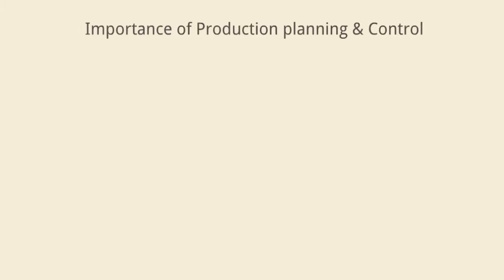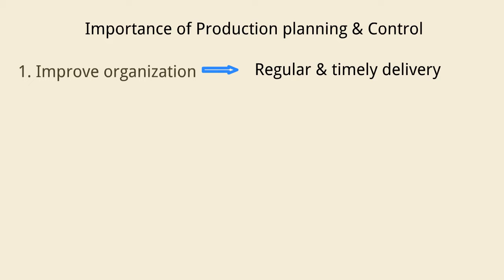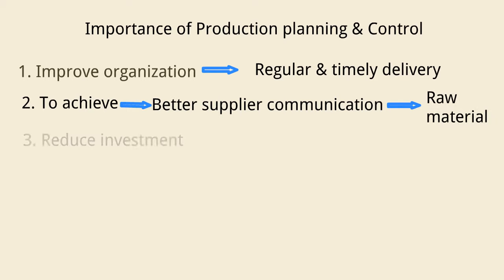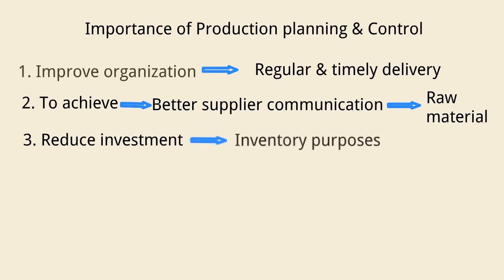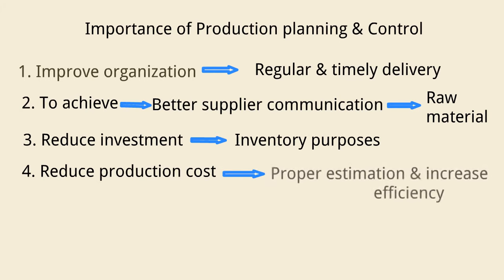What is the importance of production planning and control? 1. It is necessary to improve the organization for a regular and timely delivery. 2. It helps to achieve better supplier communication for raw material procurement. 3. Reduce investment for inventory purposes. 4. Reduce production costs by proper estimation and increase the efficiency.